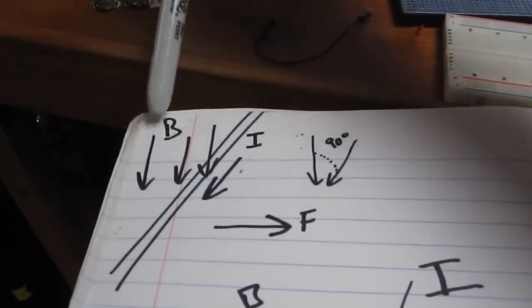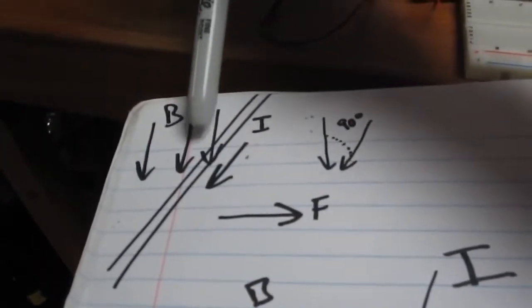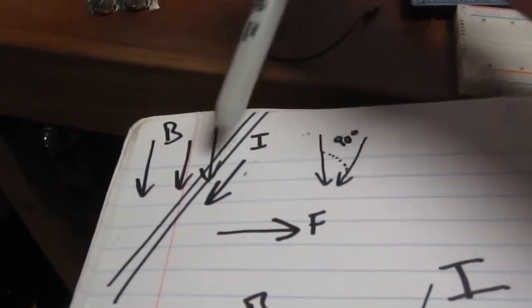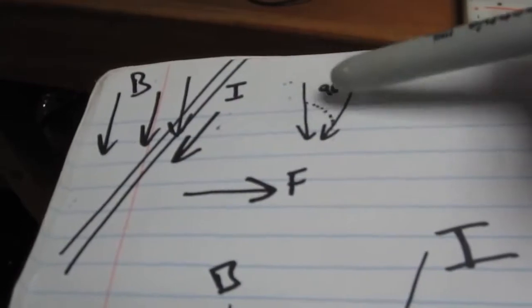And when you apply an external magnetic field, in our case B is represented by this pink magnet, you're actually producing a force on the electrons in the current, which is perpendicular to the field of the magnetic lines and the current lines. So it's a 90 degree.